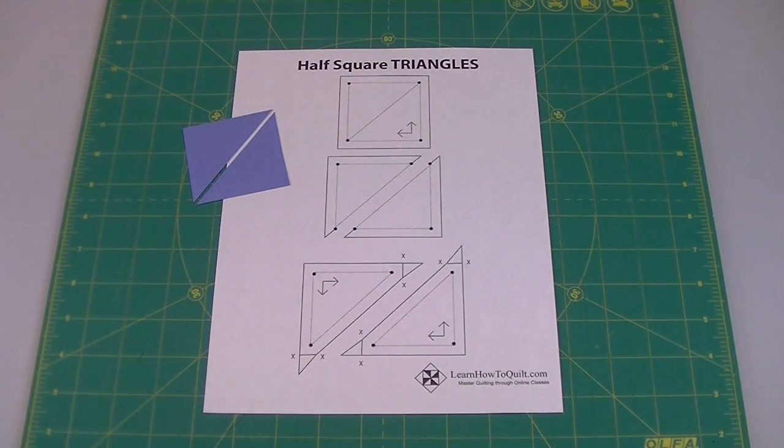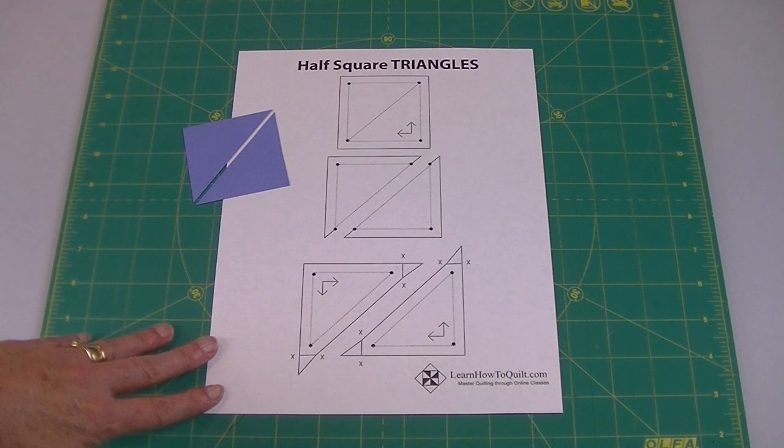Quilters often find it puzzling that you have to add seven-eighths seam allowance. So let me explain this. I have a little graphic here.